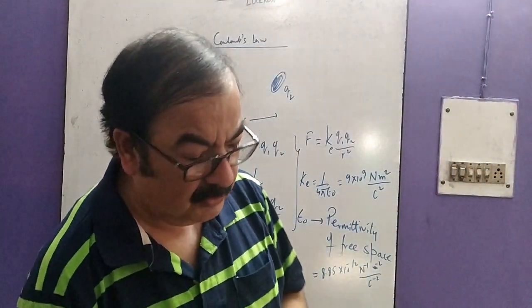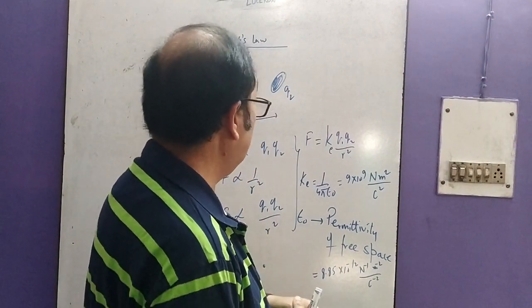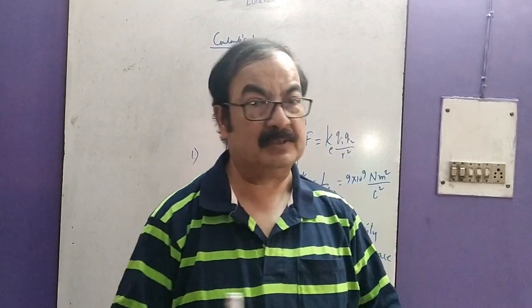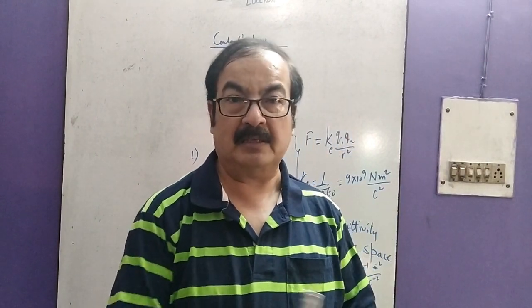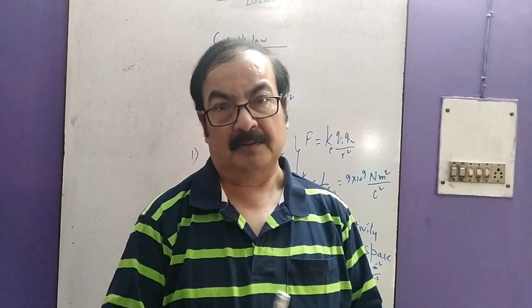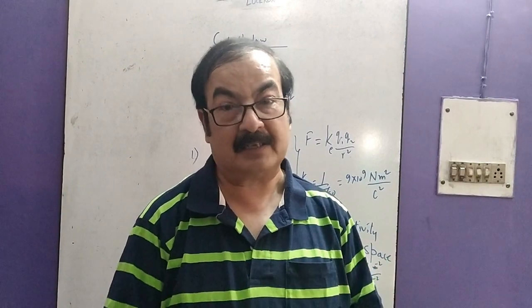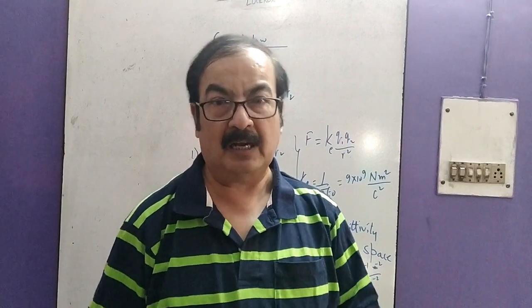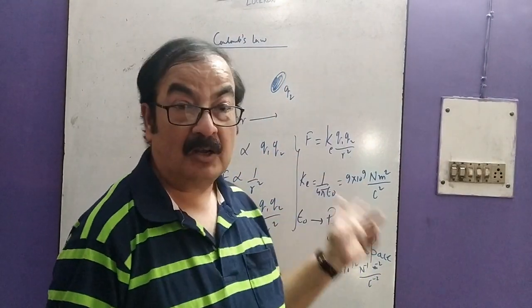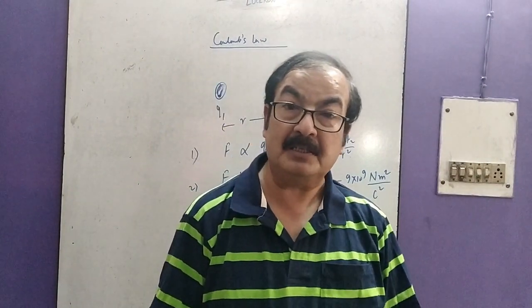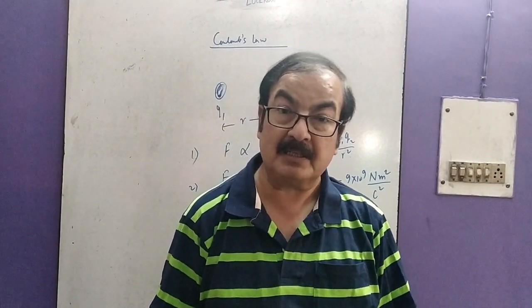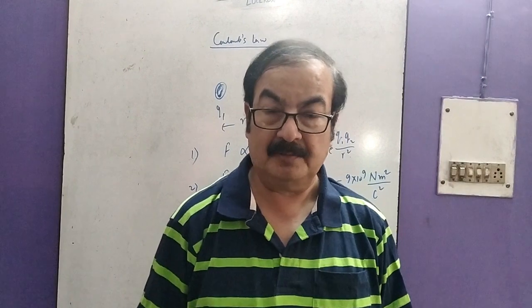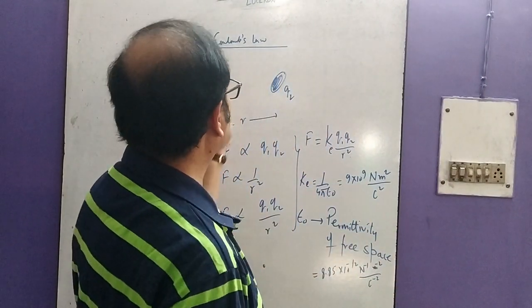Now, after knowing Coulomb's law, if anyone asks you how to define it, the definition is very simple. Although the handwritten notes are already there and will be linked with the video, I am just repeating: the electrostatic force between two point charges is directly proportional to the product of charges and inversely proportional to the square of distance between the two.